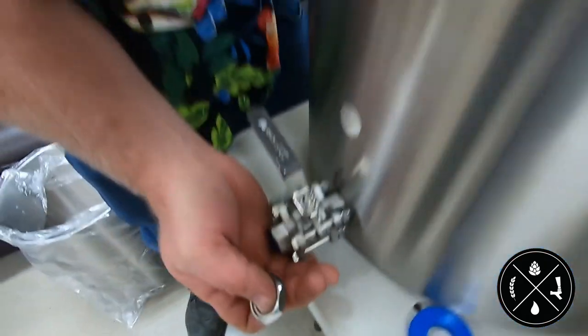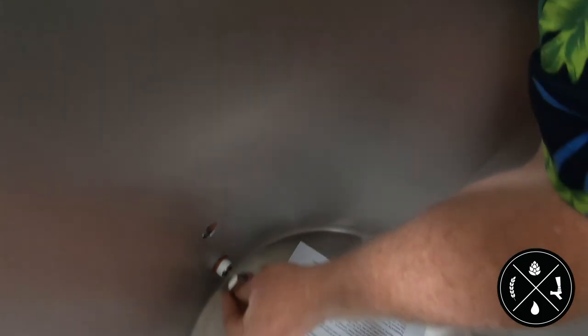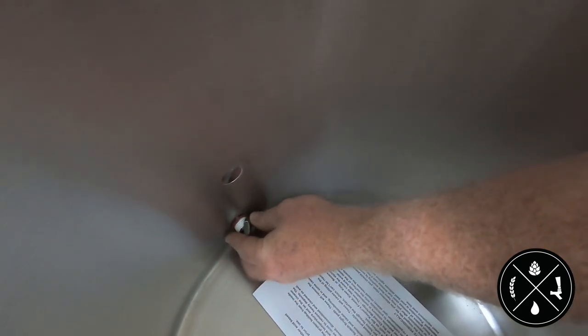While holding the ball valve and threaded nipple assembly in place from the outside of the kettle, take the included red round silicone o-ring and put it around the threading of the nipple on the inside of the kettle.